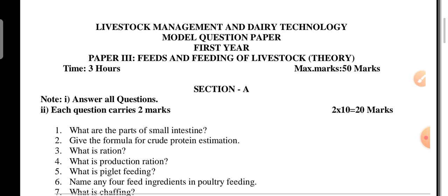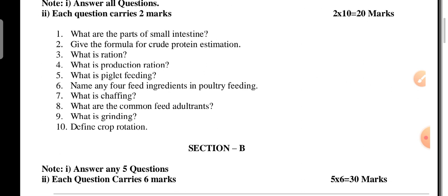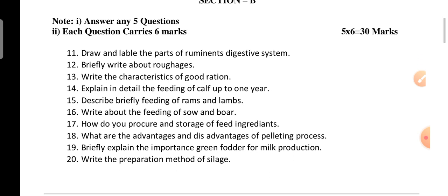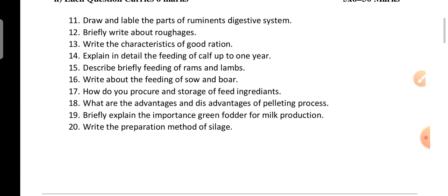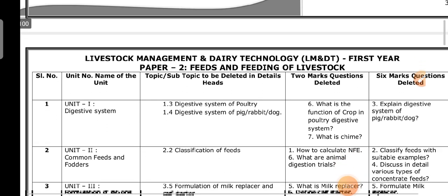In Section A, two-mark questions include: What are the parts of the small intestine? Give the formula for crude protein estimation. What is station feeding? What is peg lead feeding? Name any four feed ingredients in poultry feeding. What is chaffing? What are the common feed adult grains? What is grinding? Define crop rotation. Section B long questions include: Draw and label parts of the ruminant digestive system; explain feeding of calves up to one year; write about feeding of sows and boars; explain advantages and disadvantages of the pelleting process; explain the importance of green fodder for milk production; write the preparation method of silage.